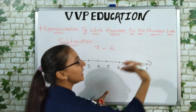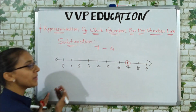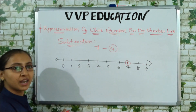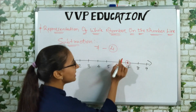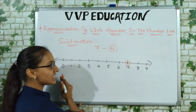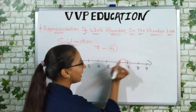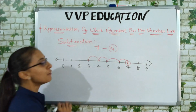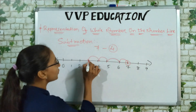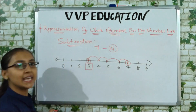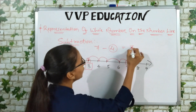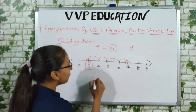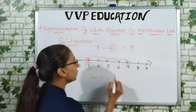So from 7, I move 4 steps to the left: one, two, three, four. Our destination point is 3. So 7 minus 4 equals 3. But note: if you exchange the numbers in subtraction and try 4 minus 7, you move 7 steps left from 4 and run out of numbers, so you don't get the same answer.